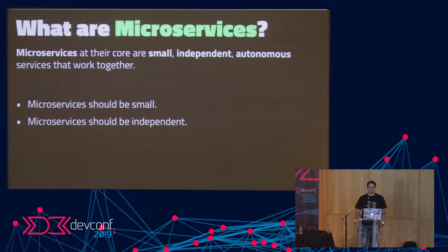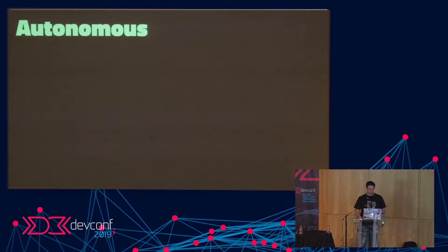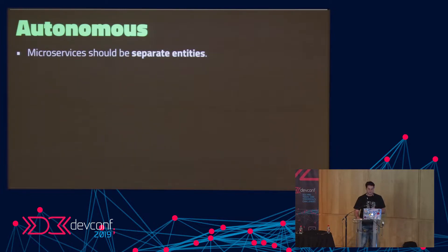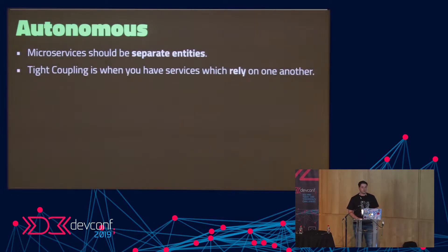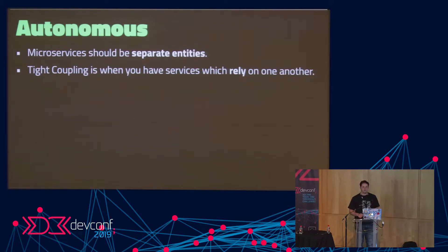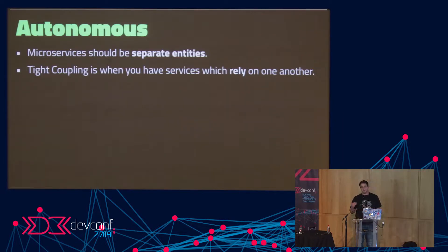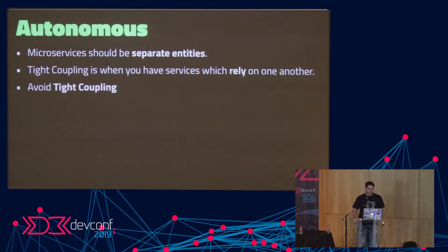You should also make sure that microservices are independent and isolated. Microservices should be autonomous — separate entities — and the reason is to avoid tight coupling. Tight coupling is when services rely on one another. If you have an order service and a product service that are very tightly coupled with too much communication between them, and one fails, the other fails too. You want to avoid tight coupling — that's really important.